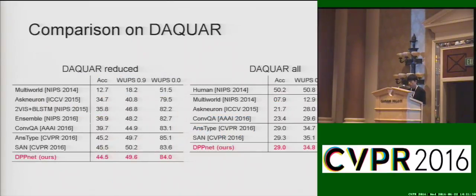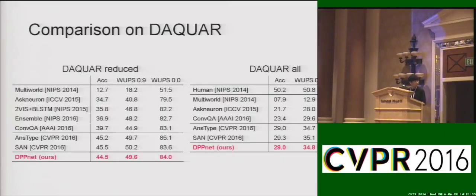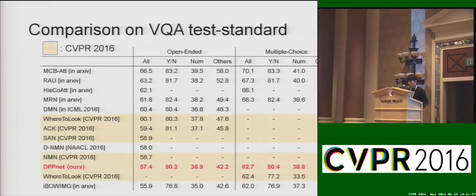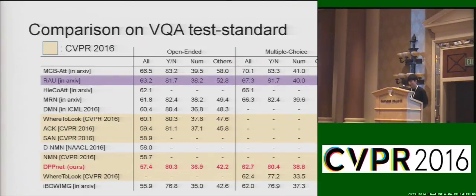This is the quantitative result on public image question answering datasets. Similar to other models presented at this year's CVPR, the proposed method shows significant improvements over previous methods on the DAQUAR and CocoQA image question answering datasets. After our proposed method, many interesting ideas have been proposed showing impressive performance on the VQA dataset. As an advertisement, our recent work on training recurrent answering units with joint loss minimization also showed strong performance.